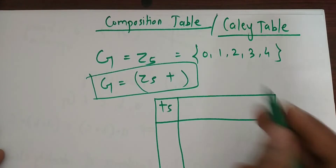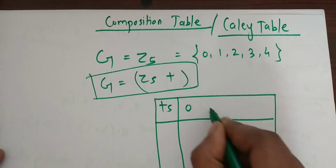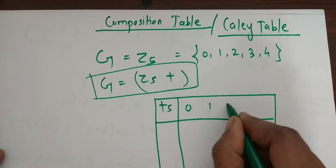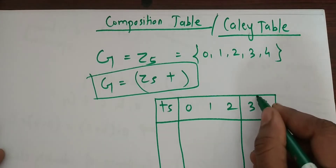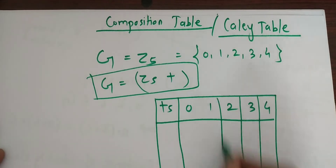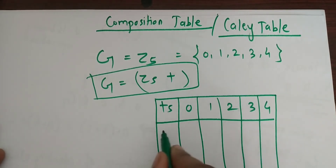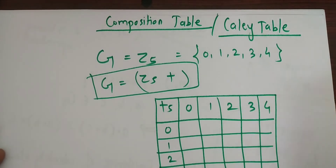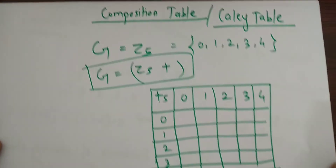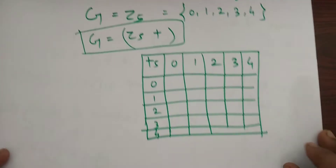So write these elements here: 0, 1, 2, 3, and 4. Here also, write the same elements: 0, 1, 2, 3, and 4. So we have to make the table like this.